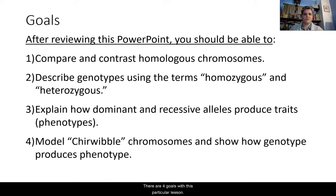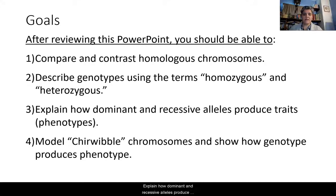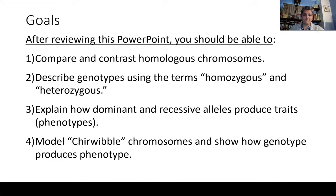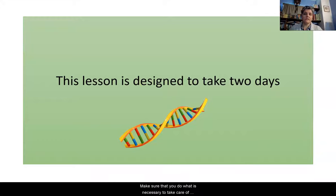There are four goals with this particular lesson. After the lesson, you should be able to compare and contrast homologous chromosomes. You should be able to describe genotypes using the terms homozygous and heterozygous. Explain how dominant and recessive alleles produce traits or phenotypes. And then model cherwibble chromosomes and how genotype produces phenotype. This lesson is designed to take about two days, so pacing is going to be really important.